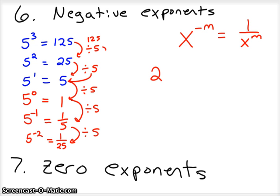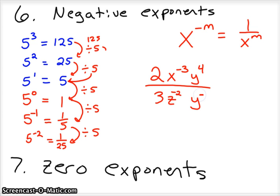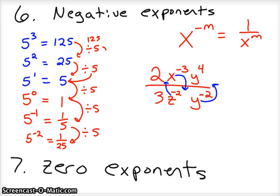Let's say we had something like this: 2x to the negative third, y to the fourth, over 3z to the negative second, y to the negative second. With negative exponents, to have a simplified expression you have to get rid of them. So x to the negative third will reciprocate and go down to the denominator. z to the negative second will reciprocate up to the numerator. y to the negative second will also reciprocate up.